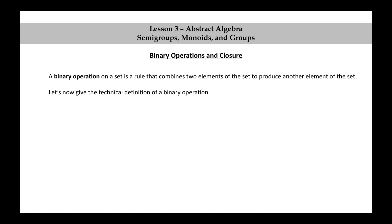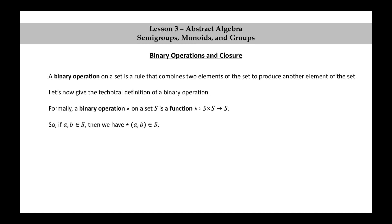Let's now give the technical definition of a binary operation. If this is a little bit confusing, don't worry too much about it — we're going to be using some sophisticated notation that will be covered in more detail in later lessons. Formally, a binary operation star on a set S is a function star from S cross S to S. So if a and b are in the set S, then star of (a, b) is in the set S. For easier readability, we will usually write star of (a, b) as a star b.